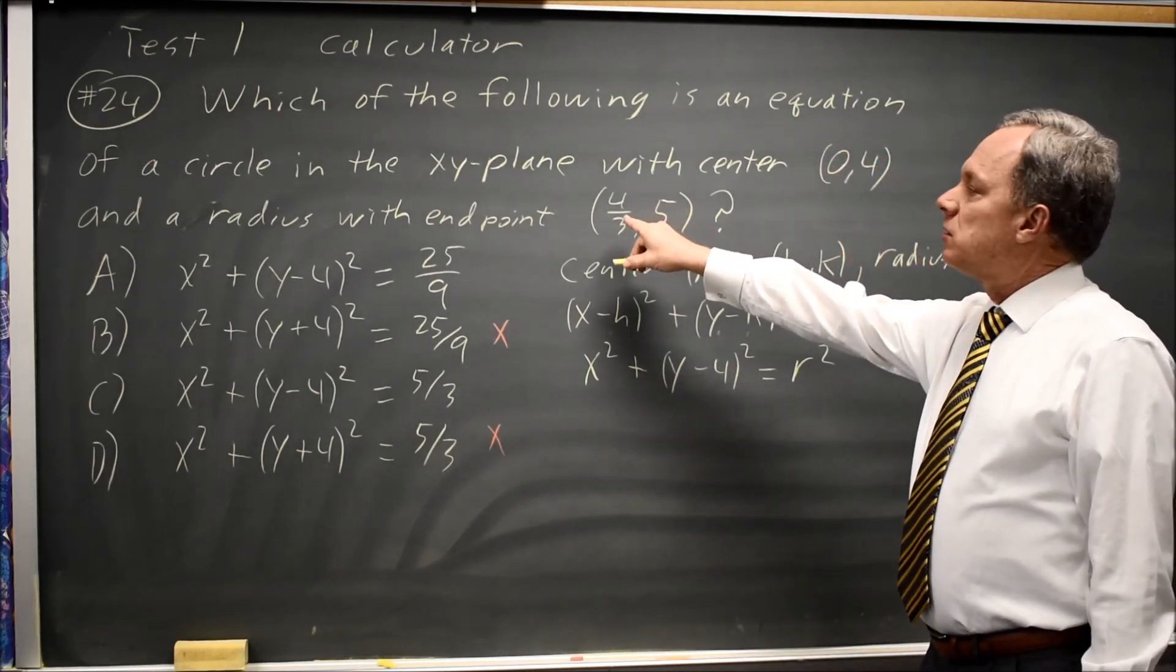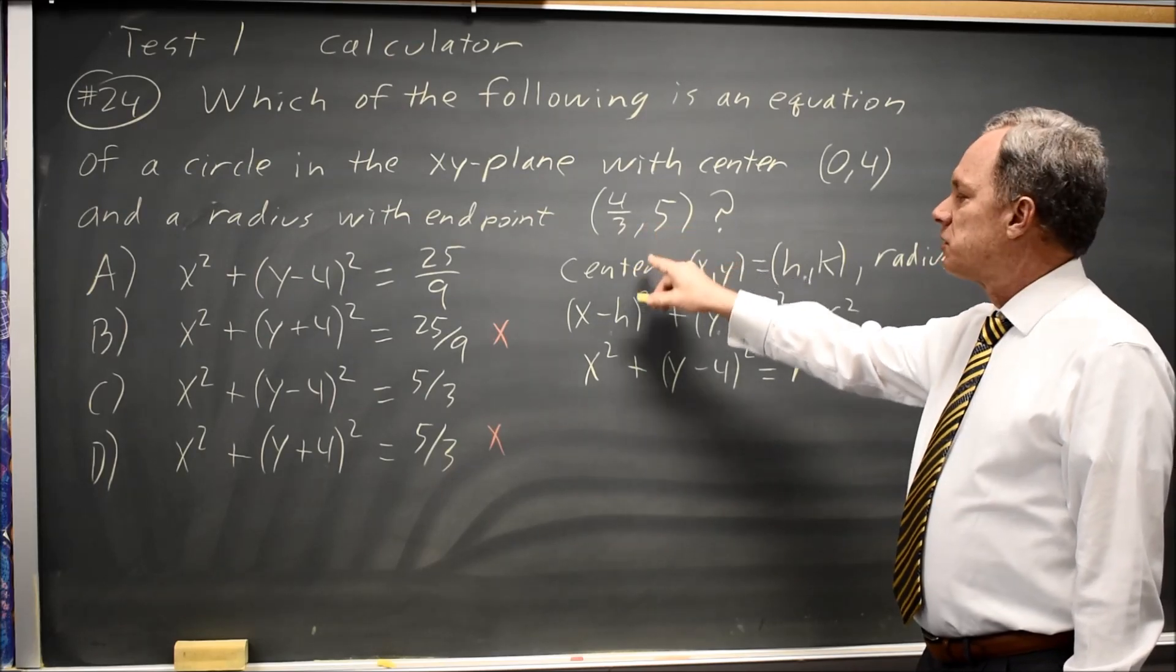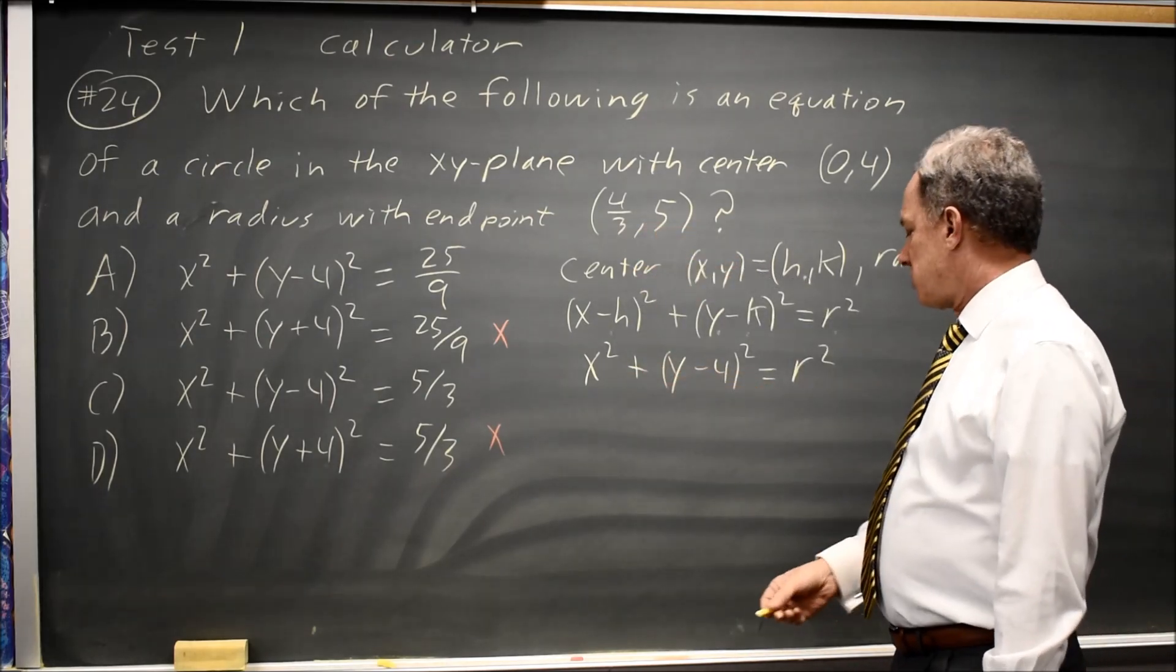We'll put the endpoint of a radius, which is a point on the circle. Put those coordinates into this equation, and we can solve for r.